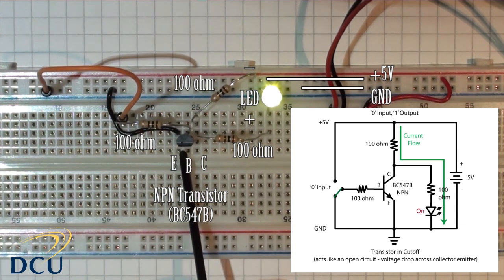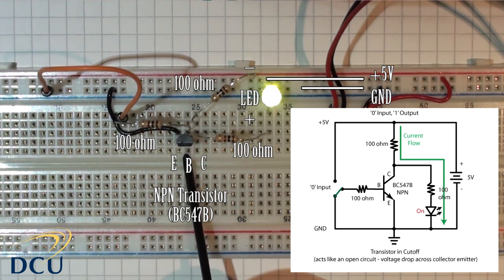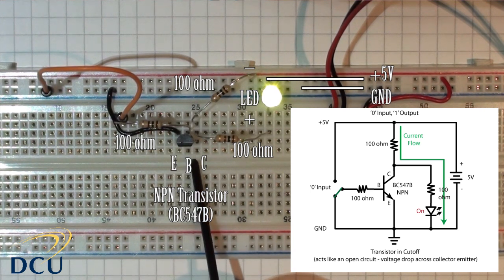The transistor is currently in cutoff, which means it behaves like a very large resistor across the collector-emitter junction.